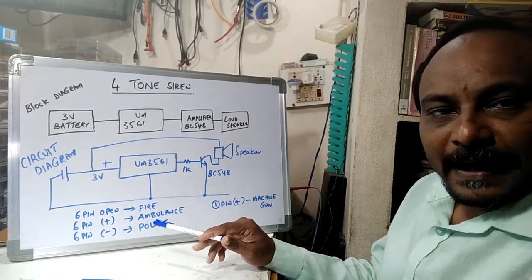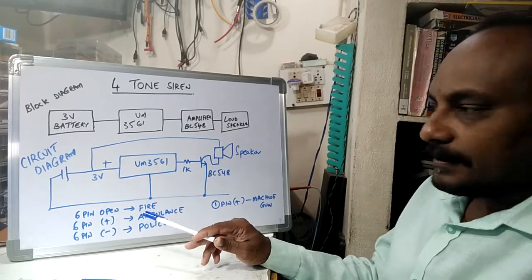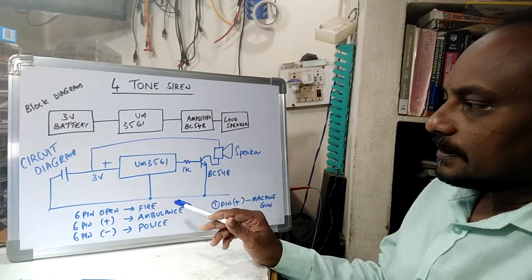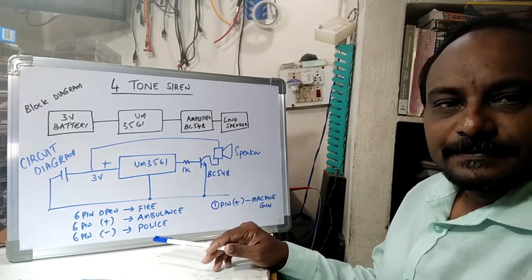So this you can identify by trial and error method and you can enjoy this circuit to get all these sirens. Thank you.